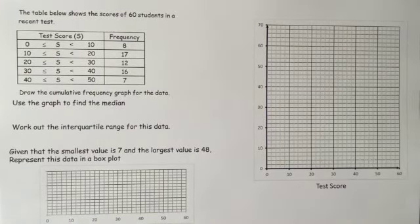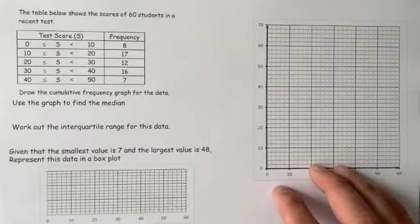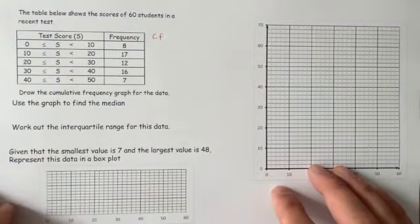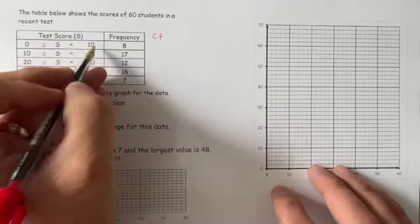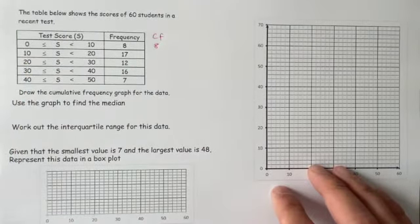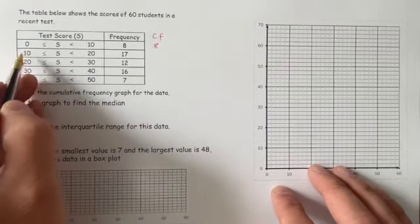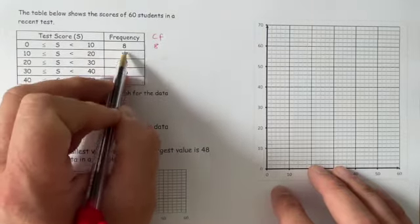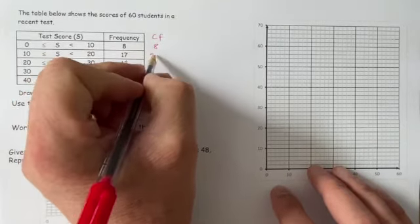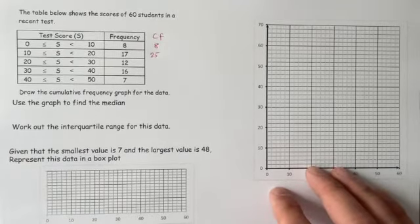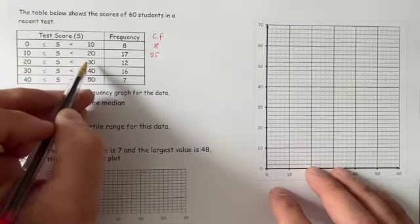In order to draw cumulative frequency, we must first start by finding what the cumulative frequencies are, CF for sure. Now we know that from 0 to 10 there were 8 students, that's 8 students. We know that from 10 to 20 there were 17 students, so from 0 to 20 students there were those two numbers together, there were 25 students. We're accumulating students as we go along here.